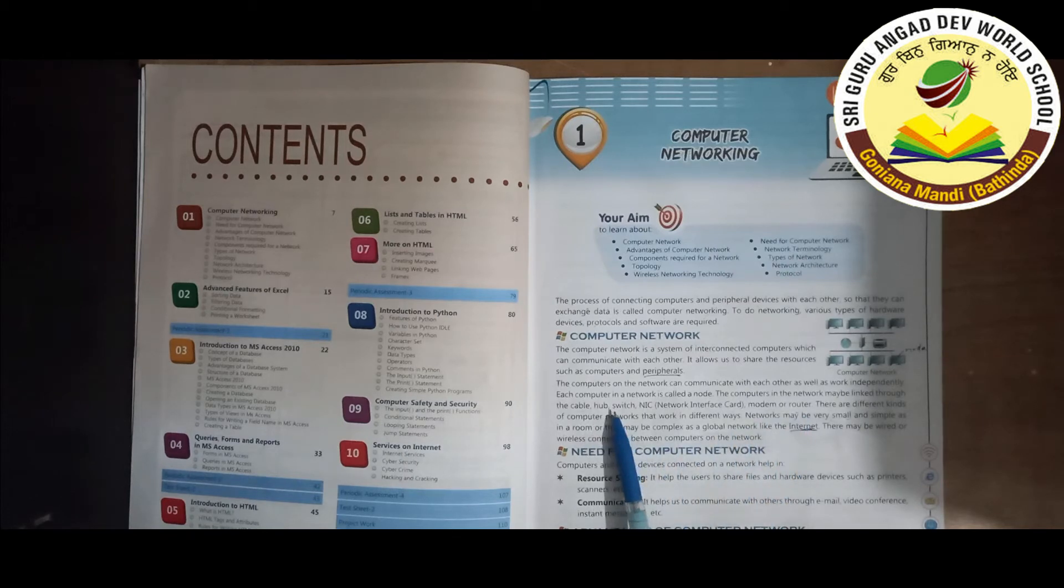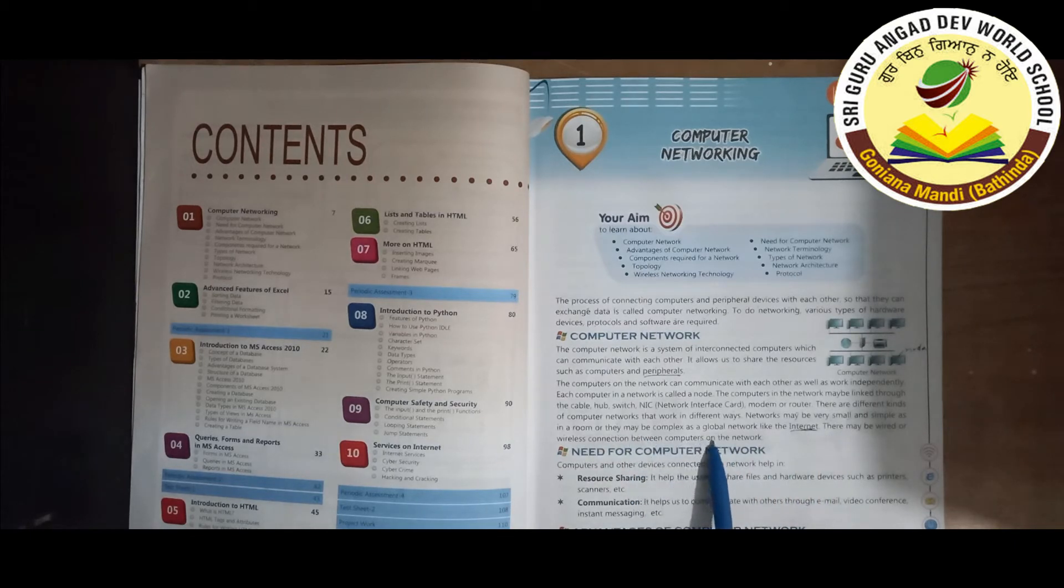These things are necessary for networking: cables, hub, switch, NIC, modem, or router. There are different kinds of computer networks that work in different ways. Networks may be very small and simple in a room, and they may become complex as a global network like the Internet.